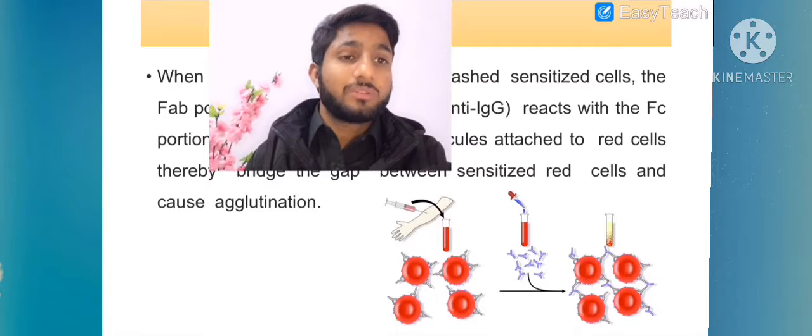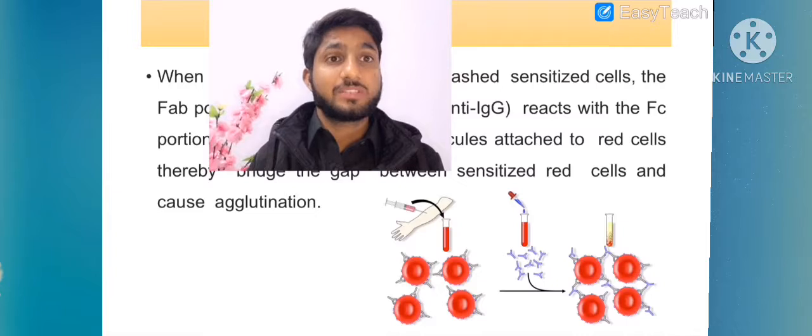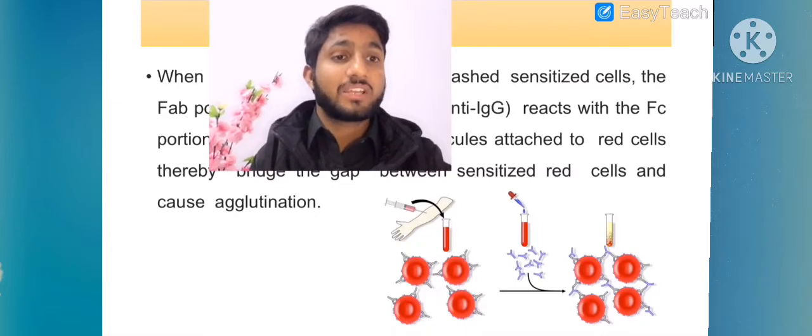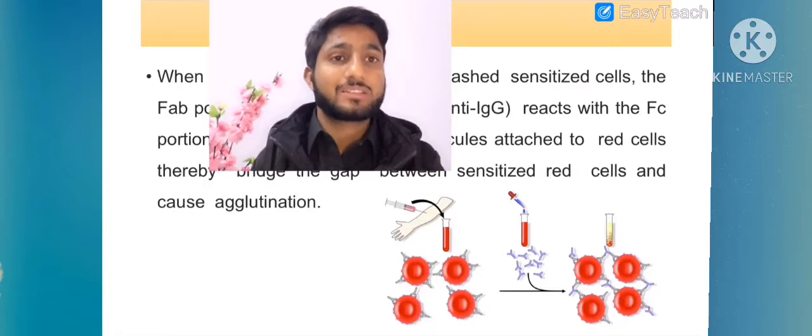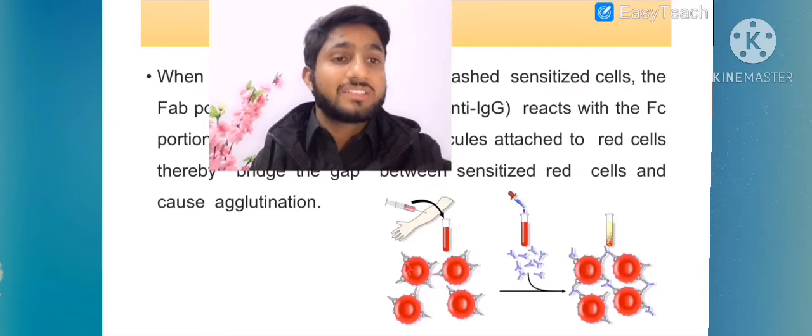Here you can see we collect the blood and prepare the RBCs. In the next step, we prepare check cells. For check cell preparation, we collect O positive red cells from a donor and react them with anti-D serum. These are red cells coated with IgG antibody - these are sensitized red cells. The Fab or variable region portion of the antibody binds to the RBCs.